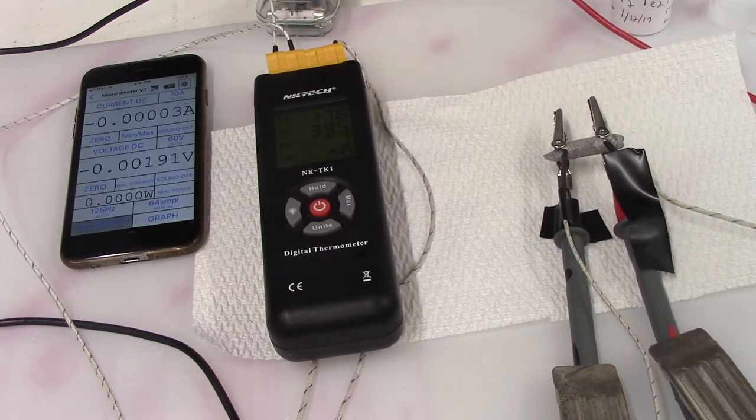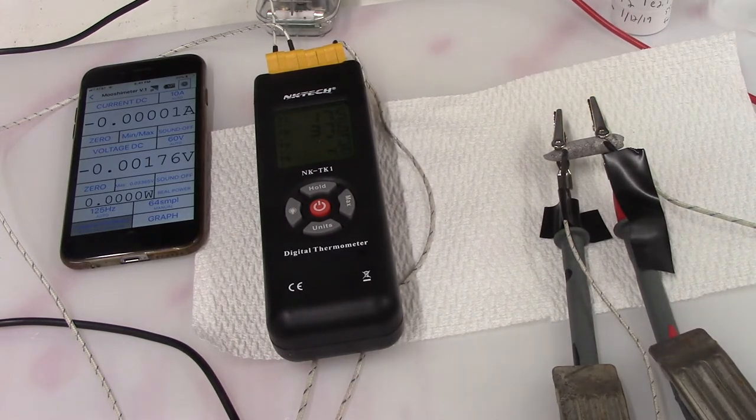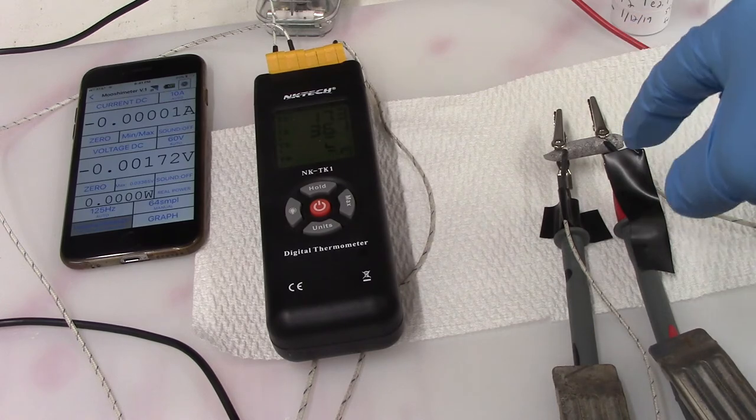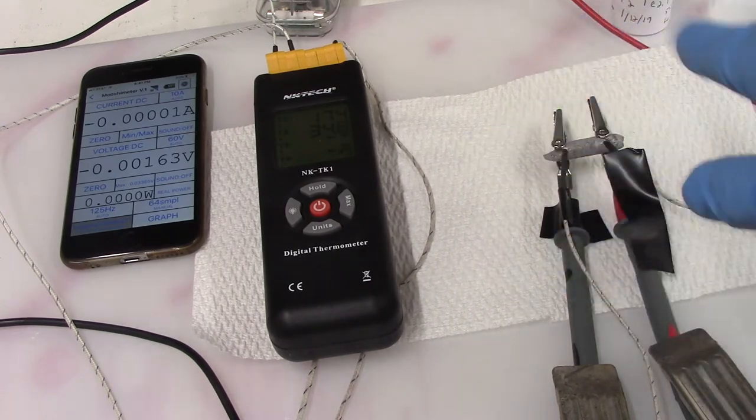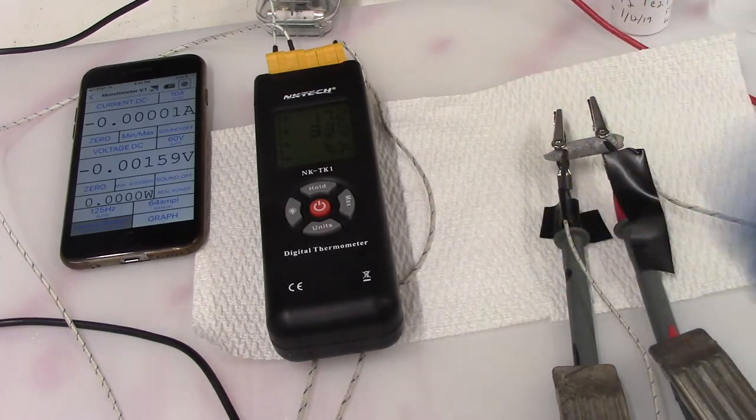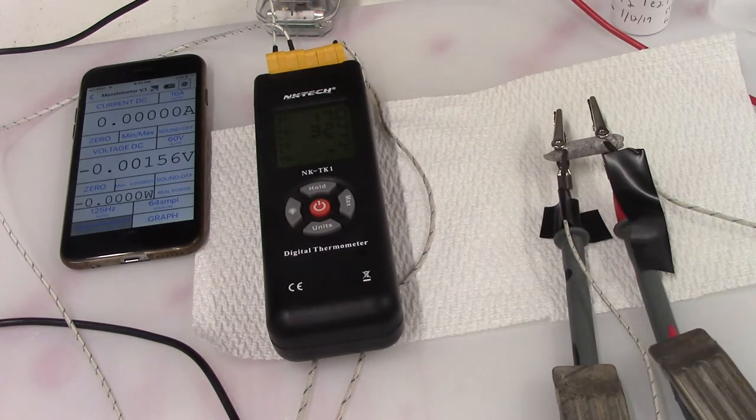So ideally what I'll do is I'll make a P-type—this is an N-type semiconductor—so I'll make a P-type semiconductor, and then I kind of put them back and forth to each other, and I can dramatically increase the voltage. That's my next step.